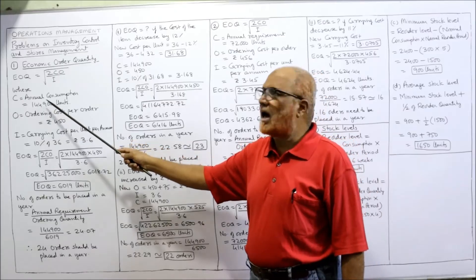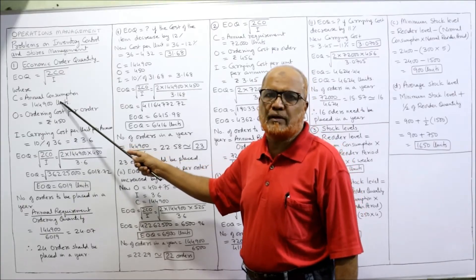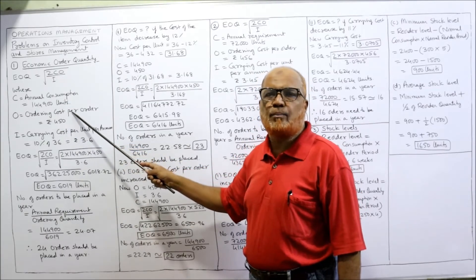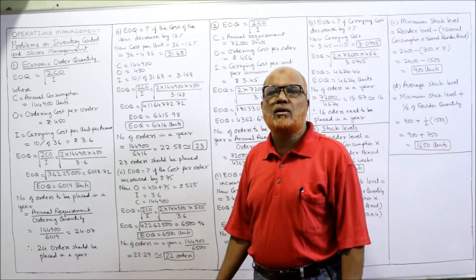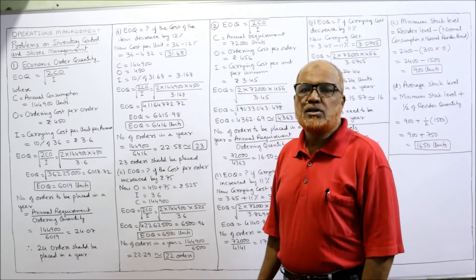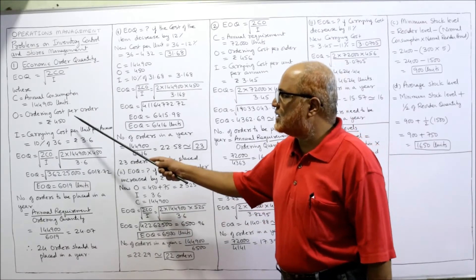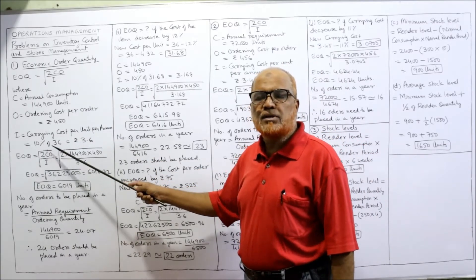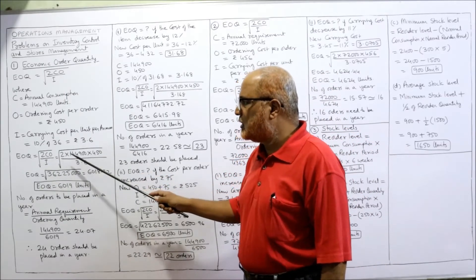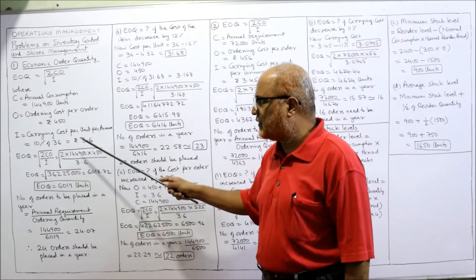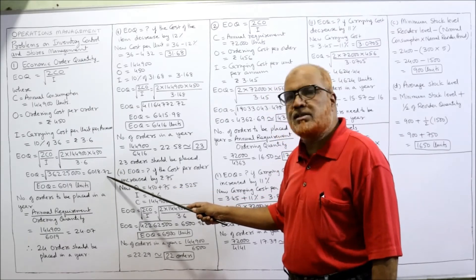In the formula, C stands for annual consumption — in our problem it is 144,900 units. O stands for ordering cost per order — given as Rs. 450. I is the carrying cost per unit per annum — given as 10% of cost per unit. The cost per unit is Rs. 36, so 10% of 36 is 3.6. Substituting: √(2 × 144,900 × 450 / 3.6), we get 6018.72.